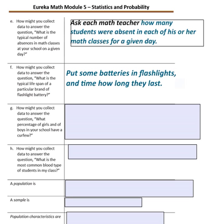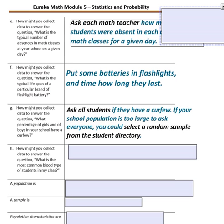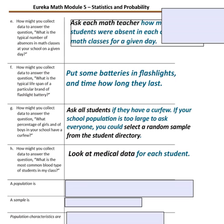Question G: What percentage of girls and boys in your school have a curfew? You could ask all students if they have a curfew. If your school population is too large to ask everyone, you could select a random sample from the student directory. Question H: What is the most common blood type of students in your class? Do you know your blood type? Do your classmates know theirs? You could look at medical data for each student, which might be found from the nurse.